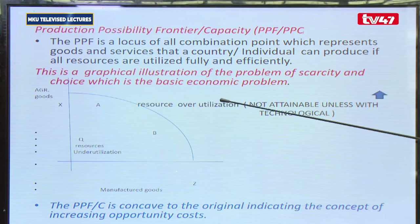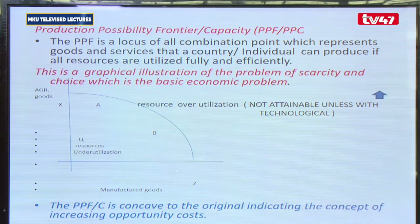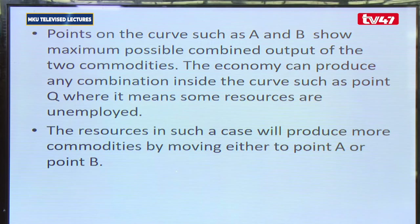Above the curve is not attainable unless there is an increase in technological services. If we are able to advance our technology, it is possible that at full utilization we are likely to achieve more. But in normal circumstances, we only move along this curve, which we call the production possibility frontier. This is important as we emphasize that resources are scarce, and therefore there is always a choice that a country must be able to make.